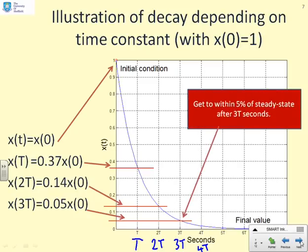Now, another key observation that you'll get used to, that we will use quite often, is you get to within 5% of the steady state value after 3T seconds. It's quite common to use 5% as an indication of I'm almost there. So that's the settling time.